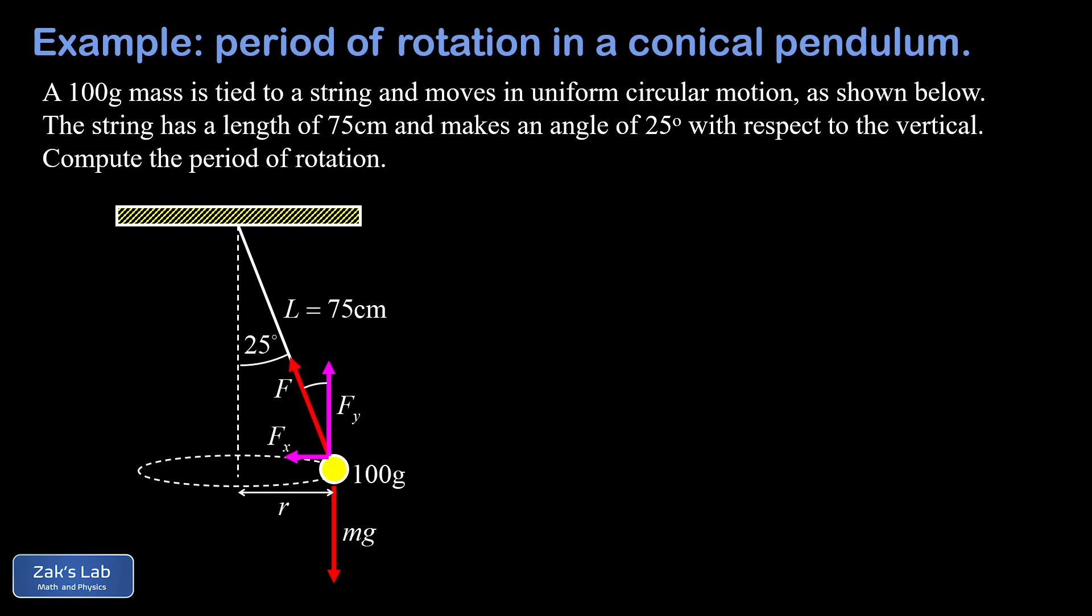Just qualitatively before we do any other analysis, I want to point out that Fy there is responsible for balancing the downward force of gravity. This pendulum bob is not going to move up or down, so those vertical forces must be balanced. And Fx, well that's the centripetal force. In order for a mass to move on a circular path there must be an inward pointing acceleration and therefore an inward pointing force, and we just found the source of that inward pointing force—it's just the x component of the tension.